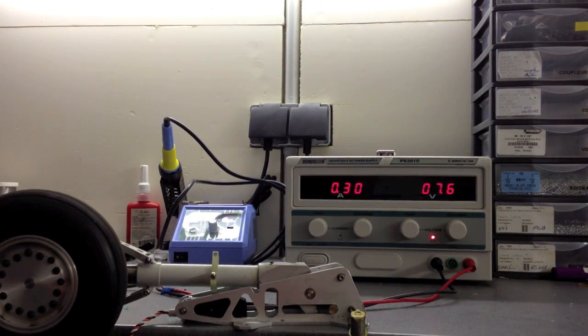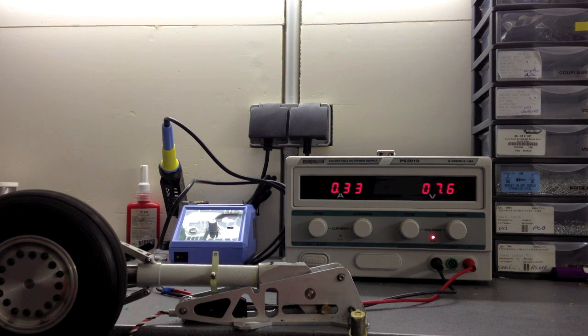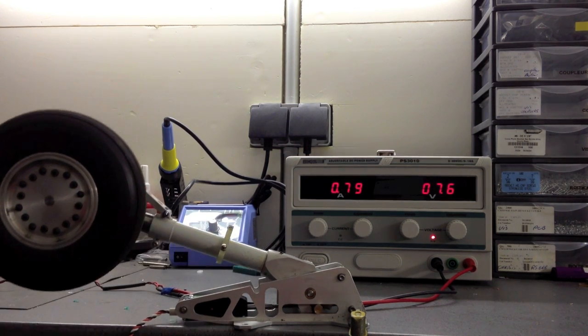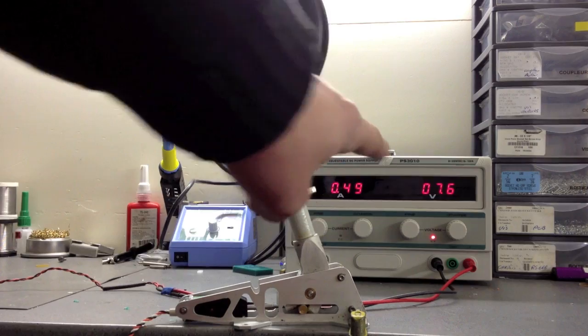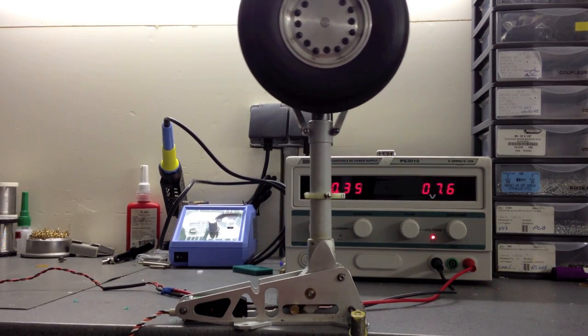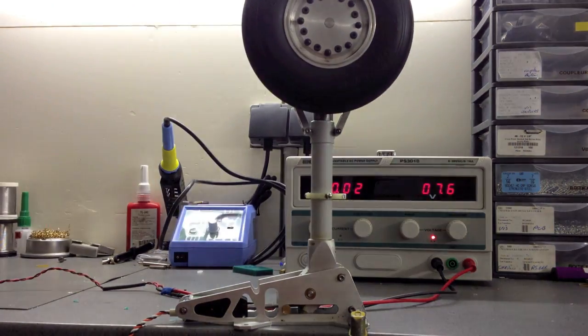During the retraction, and now the retract will go up, the legs will go up. You see 0.8, 0.6, not so much, and we are on 7.6 volts.